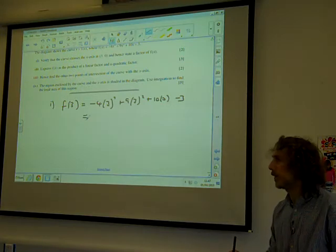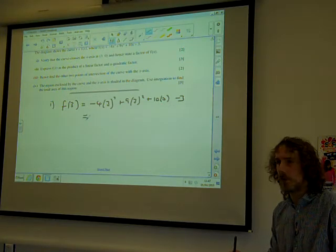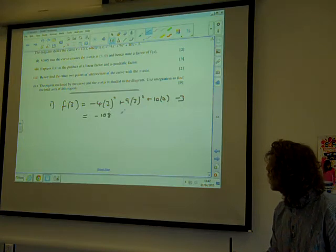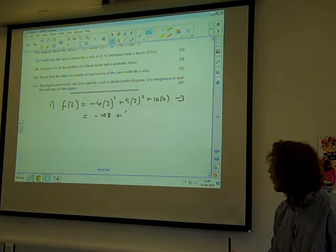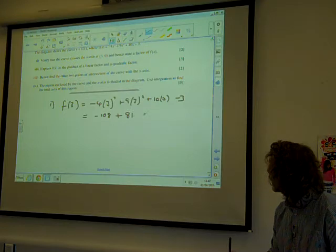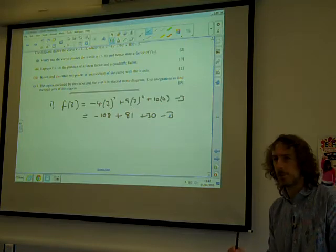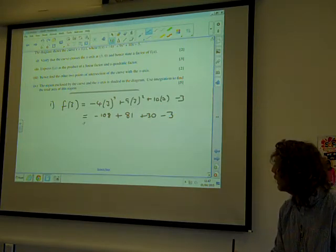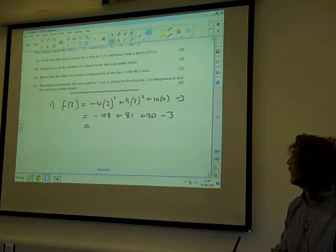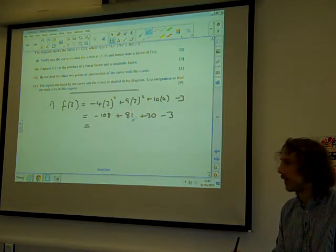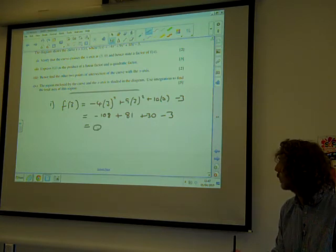We ought to show enough to show that we've actually done some working out here. 3³ is 27, and 4 times that is 108, so that's -108 + 9 times 9, so +81, +30, -3. That's looking pretty good. 81 + 30 is 111, take away the 3 is 108, take away the 108 is 0. Great.